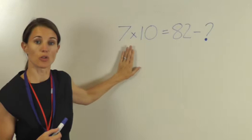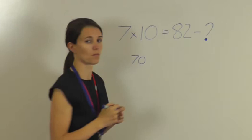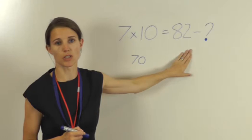So this side equals 70. This means that this side also has to equal 70 so that they're equal.